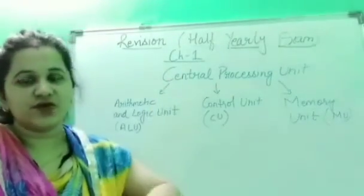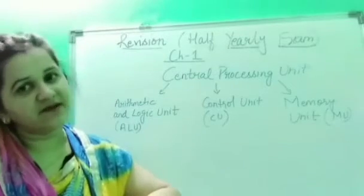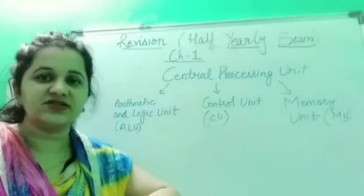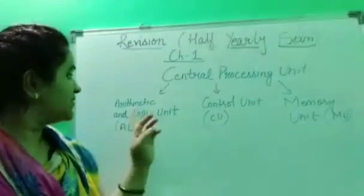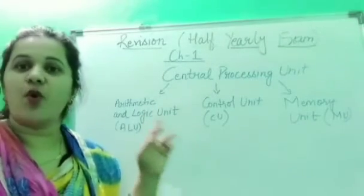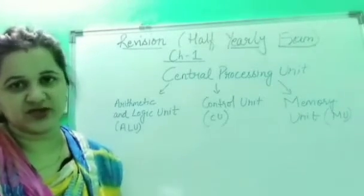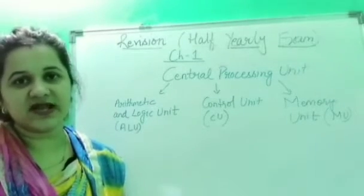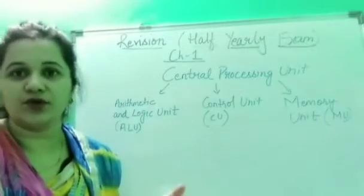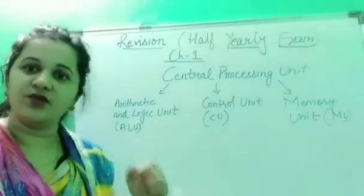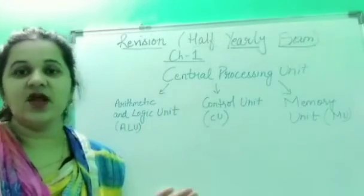Now our next topic is the Central Processing Unit, that is CPU. Just as our brain takes decisions in the human body, the CPU takes all the decisions in the computer system. It is divided into three parts. The first is the Arithmetic and Logic Unit — this unit is responsible for all mathematical calculations like addition, multiplication, and division, and logical operations like comparisons: greater than, smaller than, and equal to.